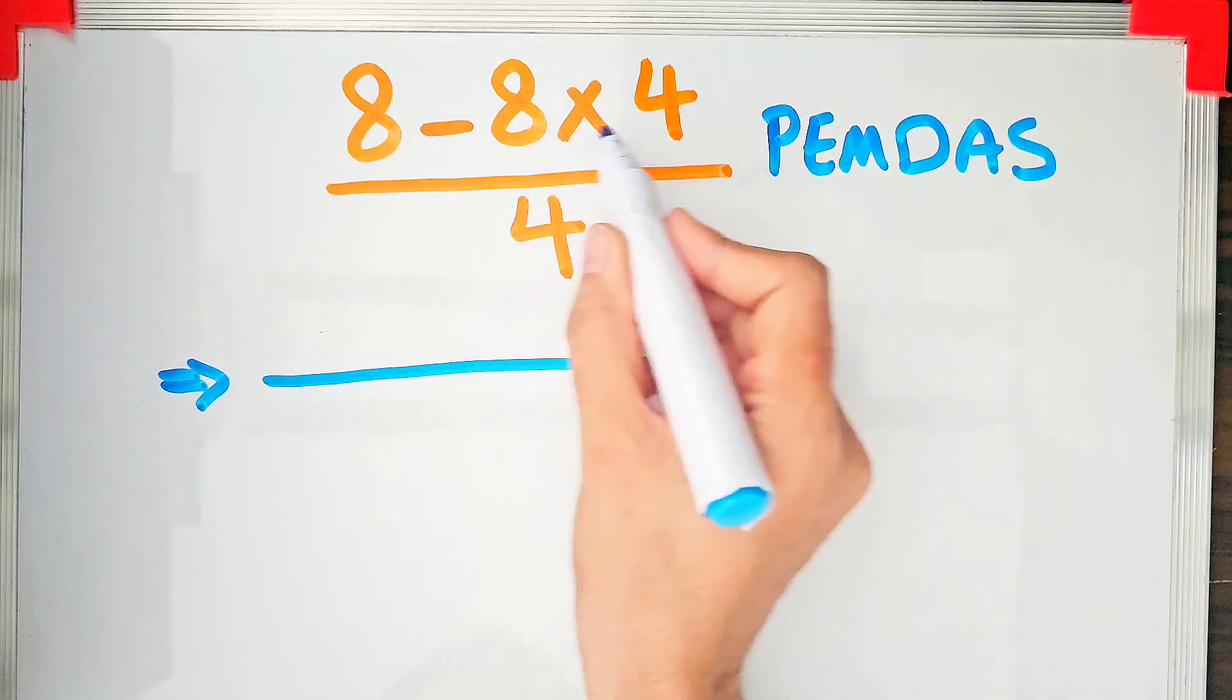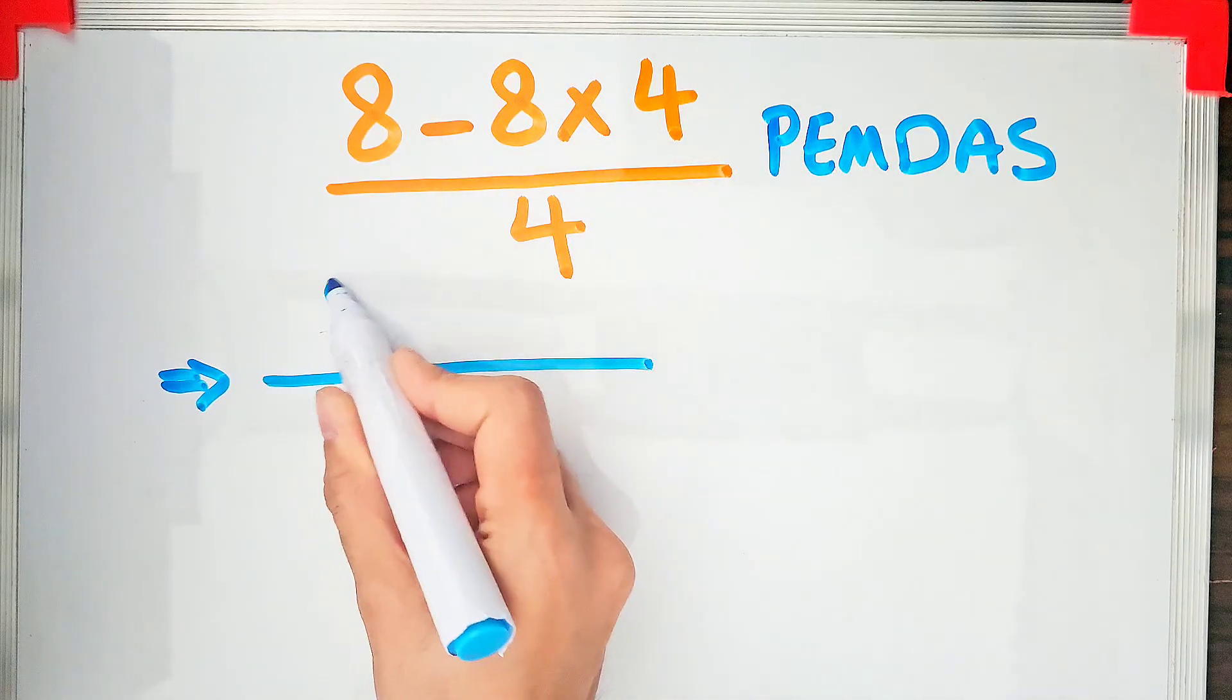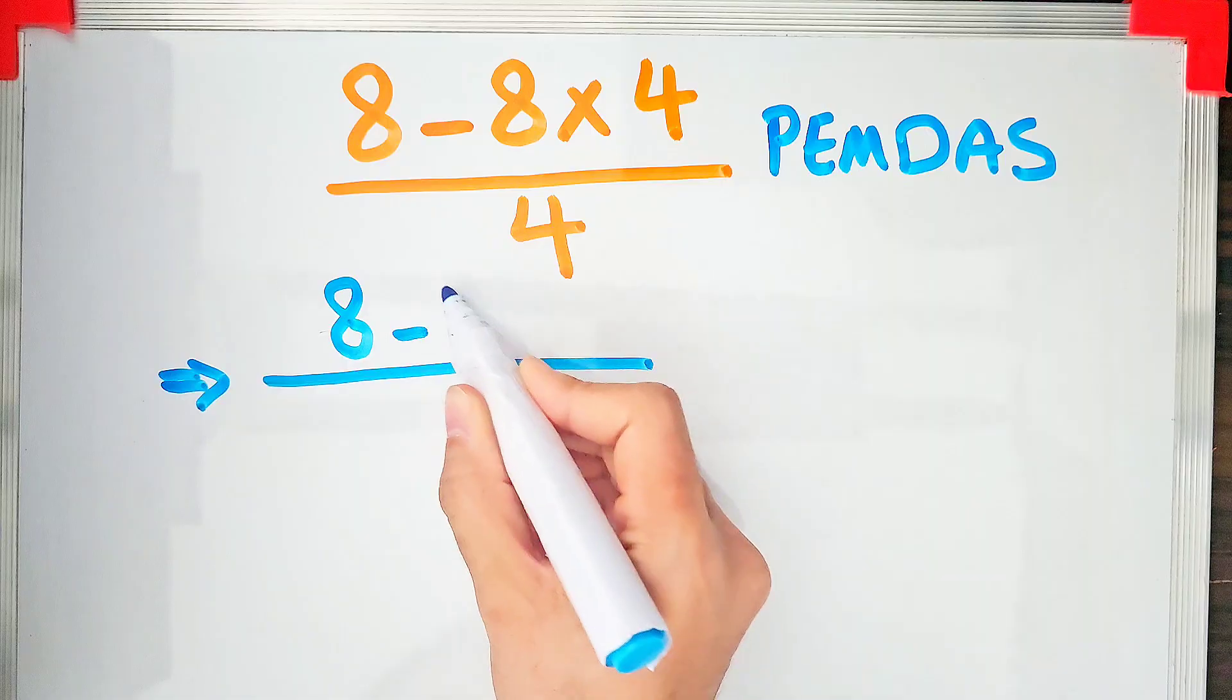The multiplication has the higher priority over subtraction, so first we do multiplication.